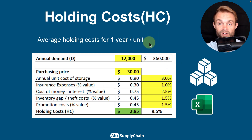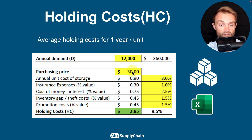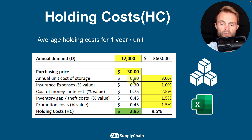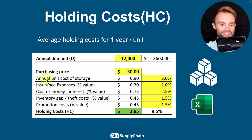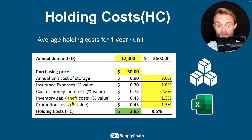Next, the holding cost is the cost of holding inventory for the same period — in this case, one year. The annual demand is 12,000 units. You also need the purchasing price — how much the product costs from the factory, including transport to your warehouse. Then there's the annual unit cost of storage. I prefer to use a percentage. You can also include insurance expenses and the cost of money — for example, 2.5% if you borrow from a bank, or 5–10% in some countries.